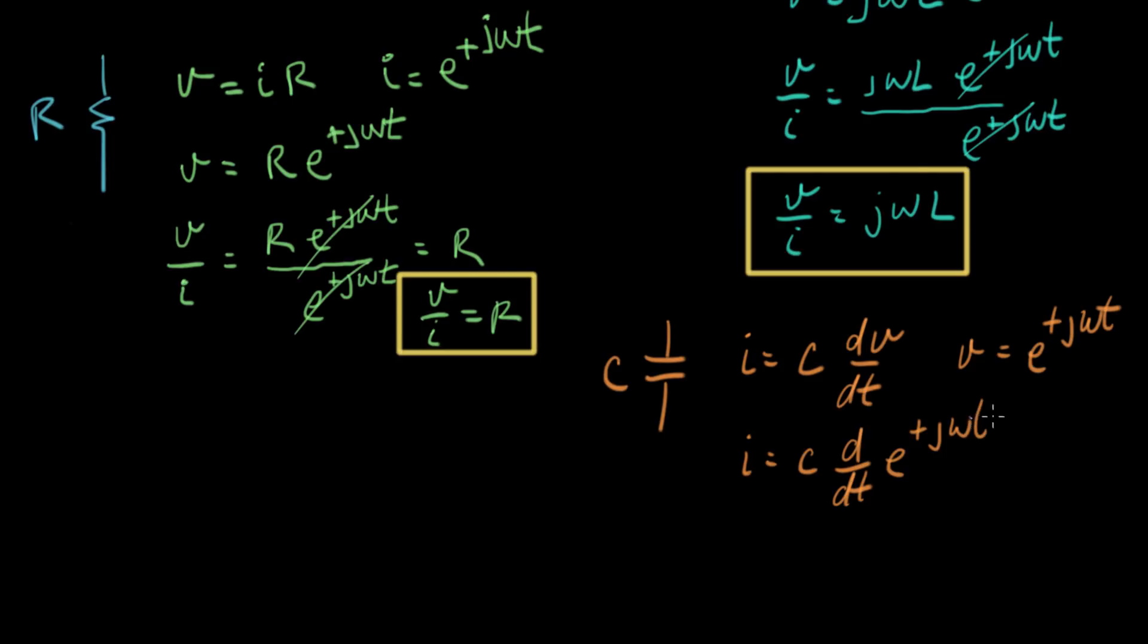And that gives us, let's plug that in. I equals C times dV dt of e to the plus j omega t. And let's take that derivative. I equals, same thing happens. J omega comes down to multiply out in front with C, and we get j omega C times e to the plus j omega t.